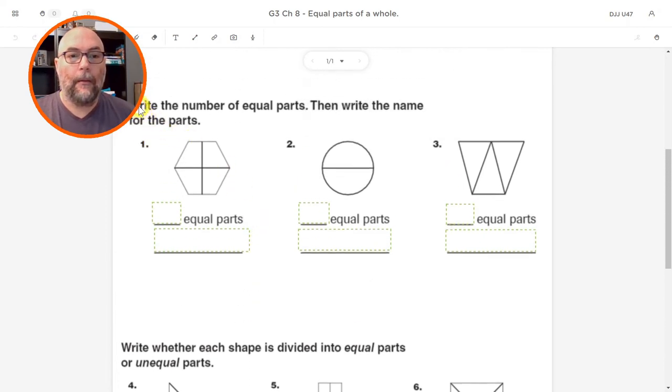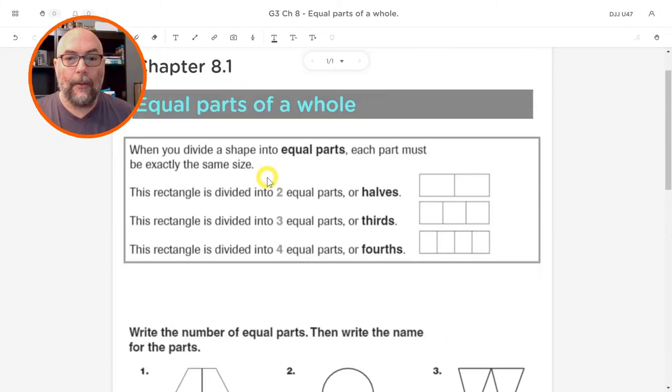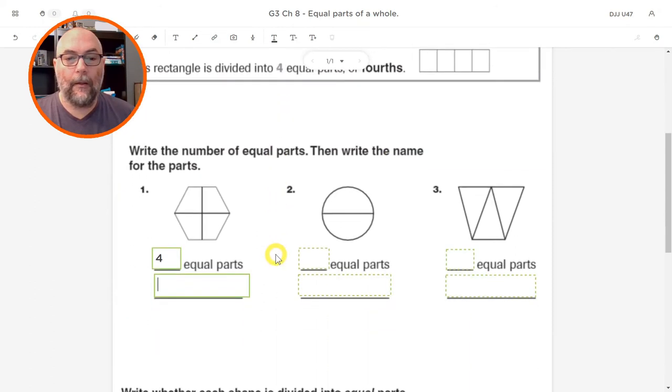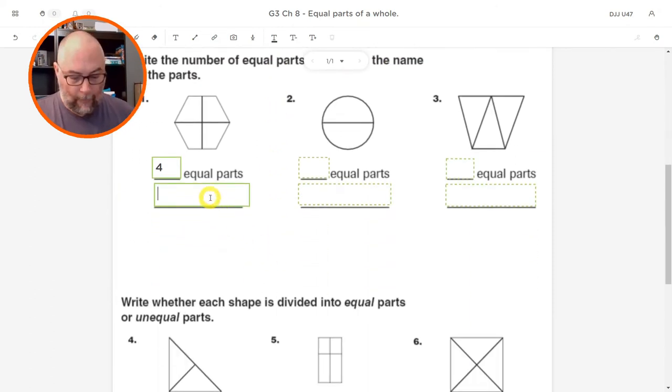Number one. Here it says, write the number of equal parts, then write the name for the parts. So in this one here, for number one, we have one, two, three, four equal parts. So I'm going to click four. I don't remember the name of four equal parts, but I know it's up here. See where it says four? It says fourths over here. So I'm going to type it in over here. Fourths. Perfect.